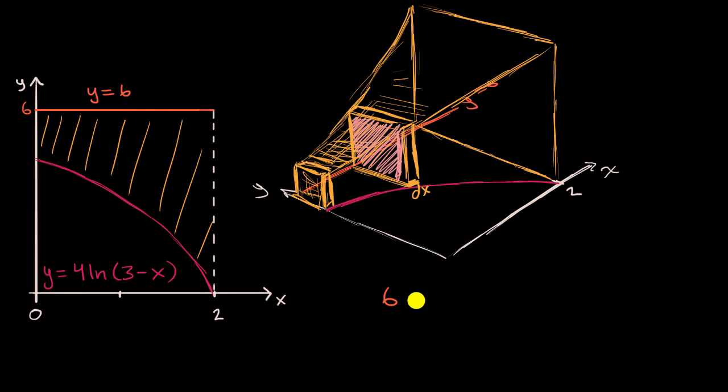It is going to be six minus, our bottom function is, four times the natural log of three minus x. And so that would just give us that length. But if we square it, we get this entire area. We get that entire area, you square it. And then you multiply it times the depth. Now you have the volume of just this little section right over here. And I think you might see where this is going.